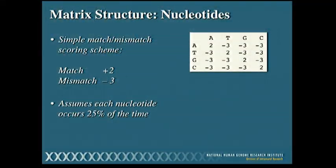If we compare two nucleotide sequences to each other, we have a simple match-mismatch scheme. We've aligned nucleotide sequence A with nucleotide sequence B and we're just going to look for exact matches. Every time we see an exact match, we give that position two points; every time we see a mismatch, we subtract three points. This is the actual scoring matrix — if a C has aligned with a C, you just look for where they intersect and there are the two points for the match. On the diagonal you always see the value two; off the diagonal, any mismatch shows minus three. This assumes each nucleotide occurs 25 percent of the time. In the nucleotide world, the side chains are chemically very similar, so you can have a very simple scoring scheme.